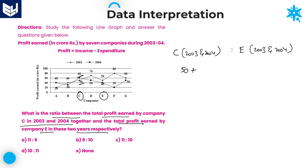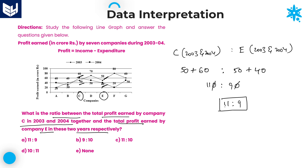Company C 2003 is 50, plus Company C 2004 which is 60, is to Company E 2003 which is 50, plus Company E 2004 which is 40. Adding: 50 + 60 = 110 and 50 + 40 = 90. The zeros cancel, giving 11 is to 9. The required ratio of Company C to Company E for both years together is 11:9. Option A is the right answer.